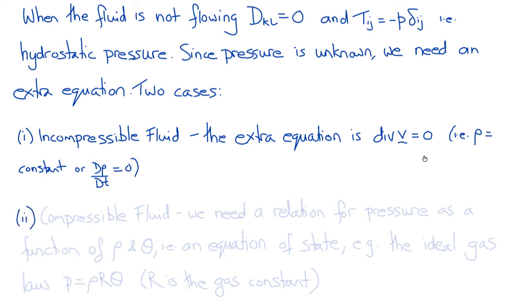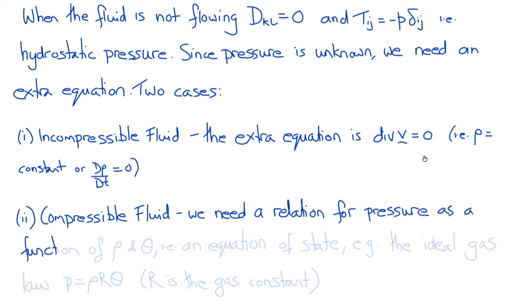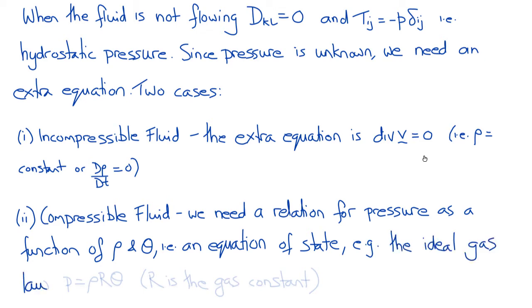The other possibility is that the fluid is compressible, or at least not specifically assumed to be incompressible. In this case, we need a relation for the pressure, typically as a function of density rho and temperature theta — written as theta so as not to be confused with the stress T. This is an equation of state, and a perfect example is the ideal gas law, which states that p equals rho r theta, where r is the gas constant.